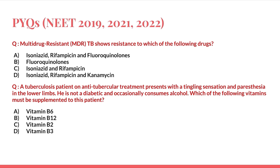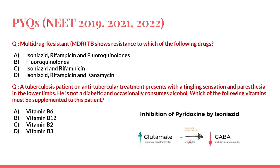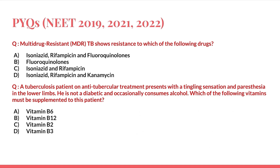Second question: a TB patient on ATT presents with tingling sensation and paresthesia in the lower limbs — not diabetic, occasionally consumes alcohol — which vitamin must be supplemented? This is a side effect of isoniazid. Isoniazid inhibits pyridoxal phosphate (Vitamin B6), a cofactor in the conversion of glutamate to GABA. Since this conversion is blocked, glutamate activity rises, causing these symptoms. The answer is Vitamin B6, which should be supplemented whenever a patient is started on ATT.